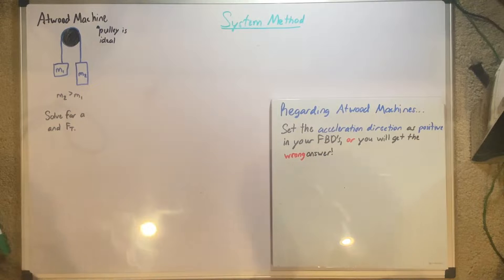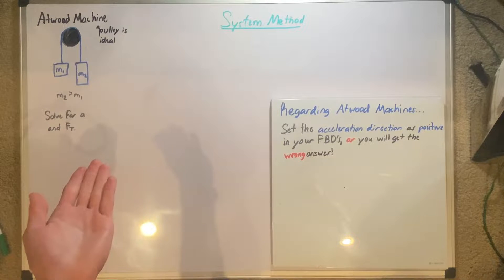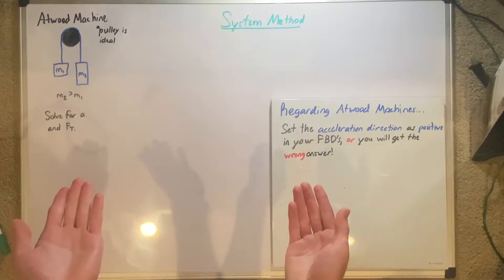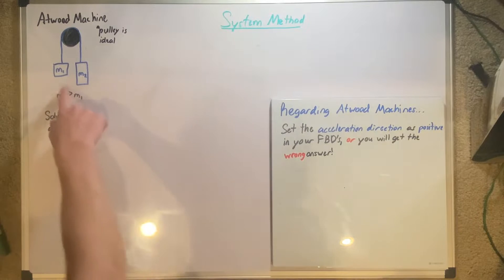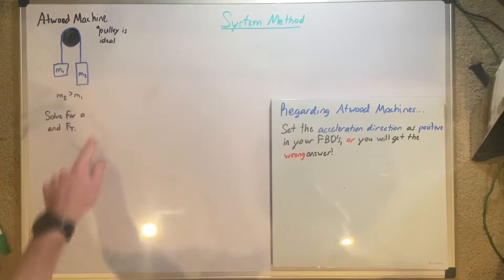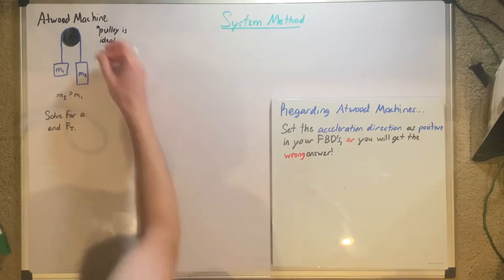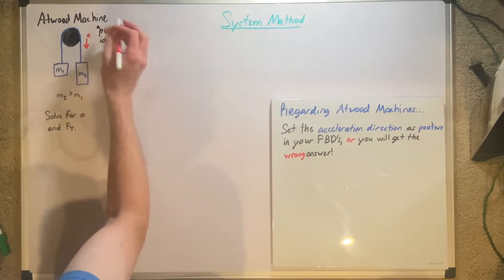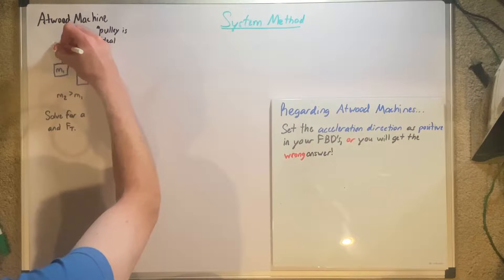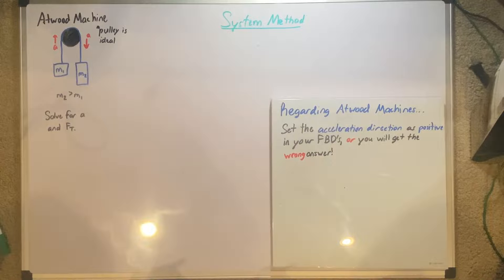How do we find which direction our acceleration is in? If you think about it, if you have a feather connected on one side of a string and a rock on the other side, the rock is going to pull straight down and the feather is going to move up. Basically, our acceleration will move like this — A going down on the heavier side and A going up on the lighter side. Things with greater mass will move down on that Atwood machine, and vice versa.